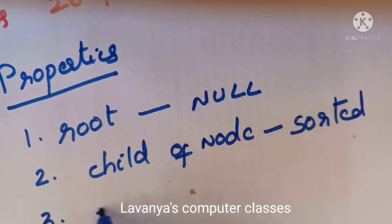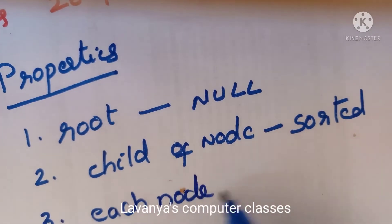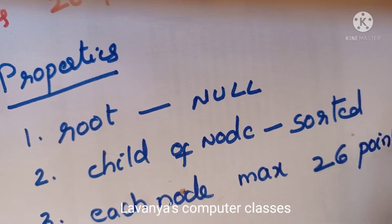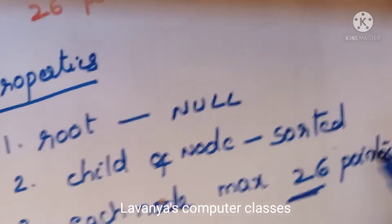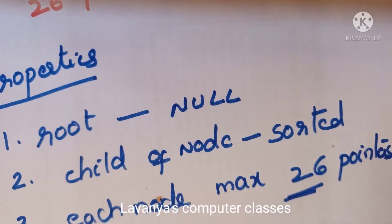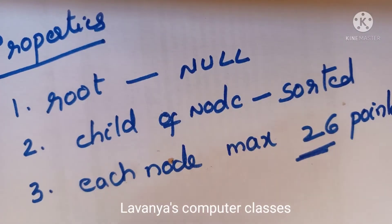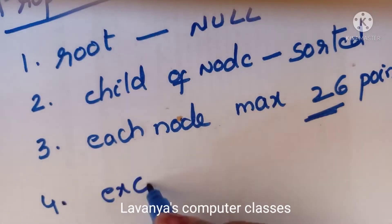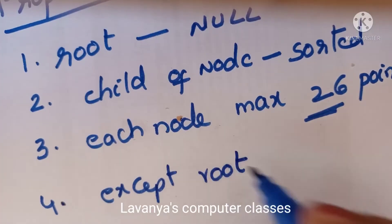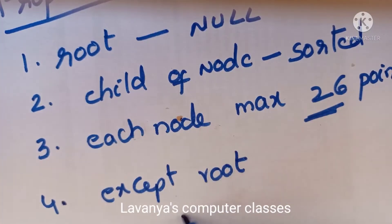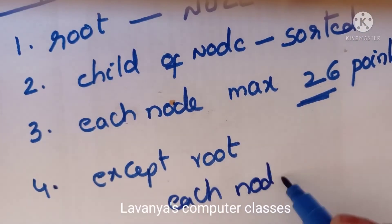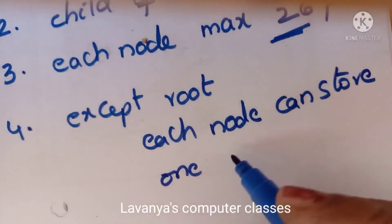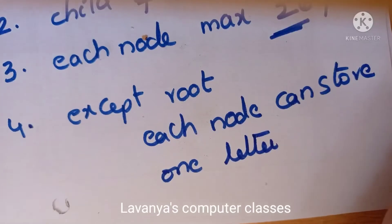Third property — each node can have a maximum of 26 pointers. Fourth property — each node can store only one letter of the alphabet, except the root node which is a null node. So these are the properties of a trie.